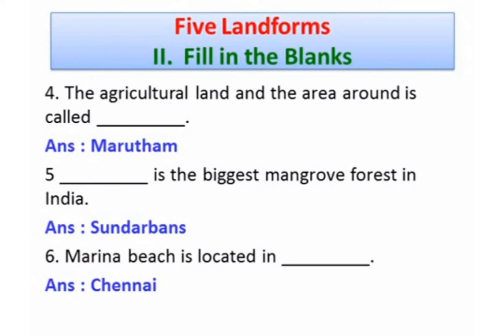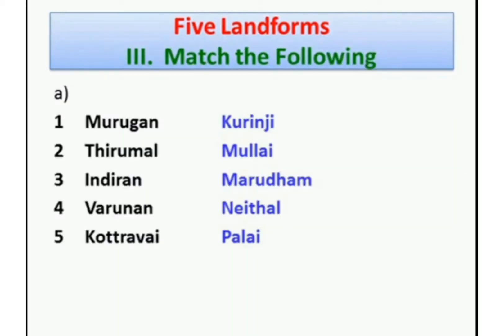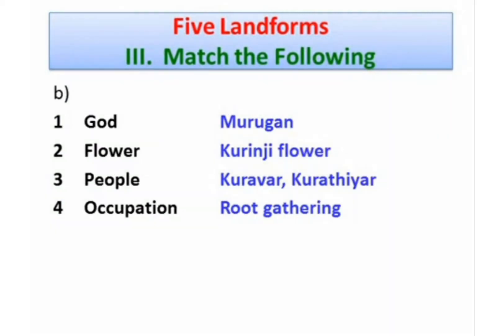Match the following. On the left side: Murugan, Thirumal, Indiran, Varunan. The answers: Murugan goes with Kurunji; Thirumal goes with Mullai; Indiran goes with Marudam; Varunan goes with Neidhal. Kottravai goes with Paalai.